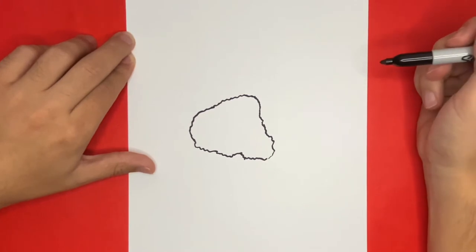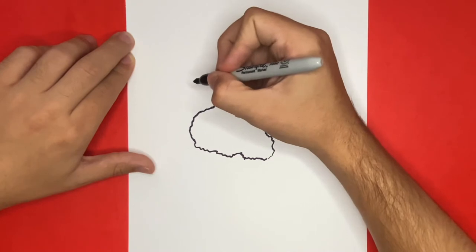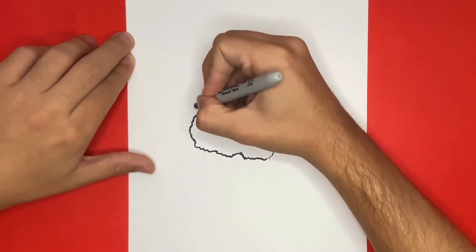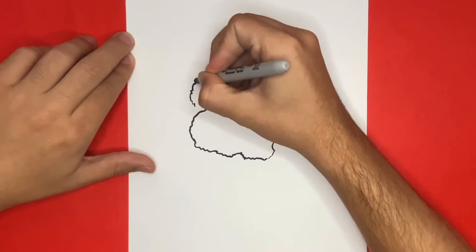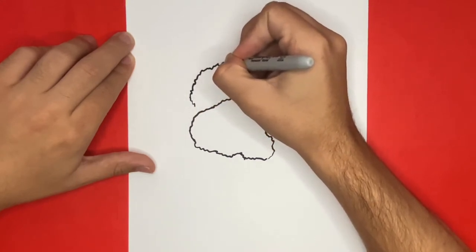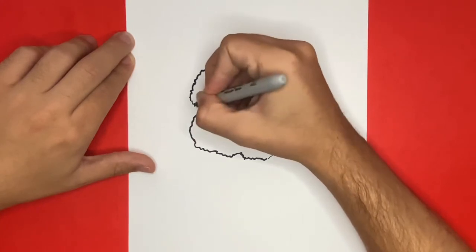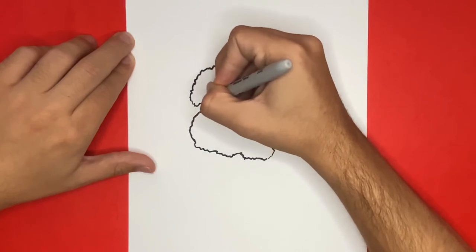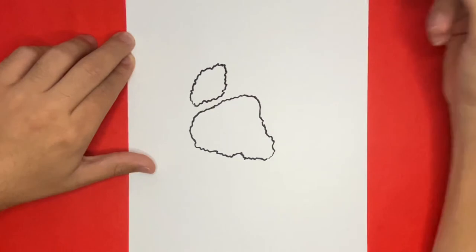Now above what we just made we have to make the toes or better known as the digital pads in the animal anatomy world. So up on the left hand side we're going to make the first toe that will be squiggled just like how we made the metacarpal pad. Great job.